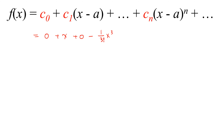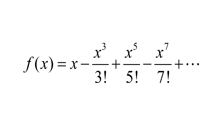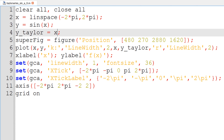Similarly, c_4 becomes 0, and c_5 will be 1 over factorial of 5, followed by x to the power of 5, and so on. So overall, the Taylor series of f(x) at A equal to 0 becomes: x minus x cubed over factorial of 3, plus x to the power of 5 over factorial of 5, minus x to the power of 7 over factorial of 7, and so on. In GNU Octave, I will continue to add additional terms to see what happens in the plot.